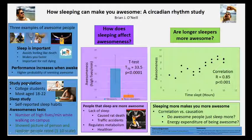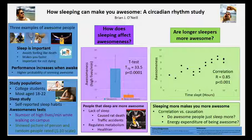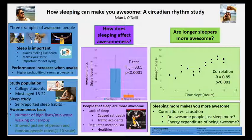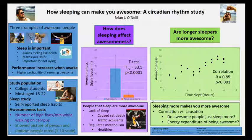Then we move on to the methods section, where I give the study population and describe looking at a sleep study — basically, how does sleeping affect awesomeness? It's a silly example, but it makes sense. We're testing awesomeness by counting high fives per minute while walking on campus, and then random people rate how awesome someone is on a one-to-ten scale.